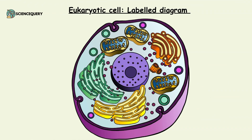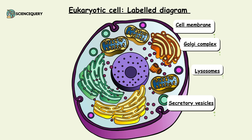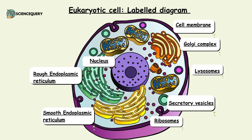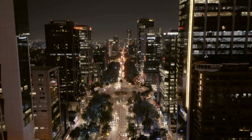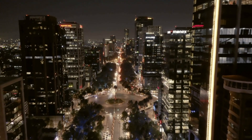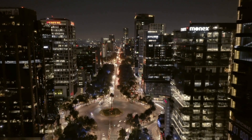The label diagram of a eukaryotic cell consists of cell membrane, Golgi complex, lysosome, secretory vesicles, ribosomes, smooth endoplasmic reticulum, rough endoplasmic reticulum, nucleus and mitochondria. Now let us understand all the organelles of the eukaryotic cell one by one with the help of a simple analogy of a city.